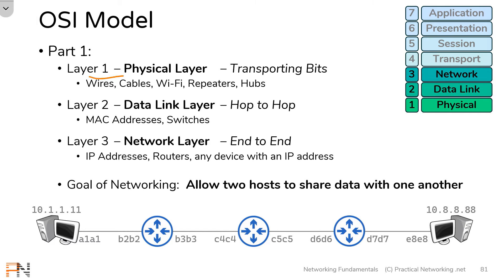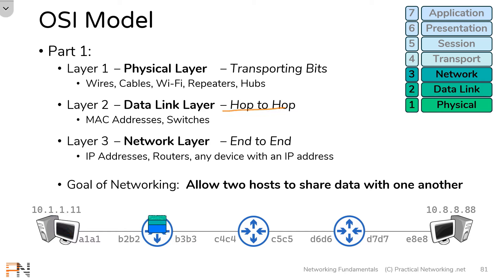We discussed that Layer 1, the physical layer, was responsible for transporting 1s and 0s across the wire. We then illustrated how if this host has some data it needs to send to another host, it needs to start by adding a Layer 3 header, which will facilitate carrying the data from one end to the other. Then a new Layer 2 header will be added to carry the data from one hop to the next. This will continue across the entire path between these two hosts.